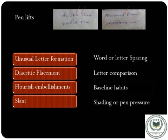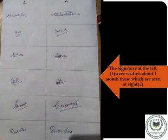Many more characteristics are used in signature analysis, such as unusual letter formation, diacritic placement, flourish embellishment, slant, word or letter spacing, letter comparison, baseline habits, and shading or pen pressure. In this slide we can see examples of signatures. The first row has signatures of different writers, and after one month — hiding their previous signatures — I asked the writers to sign again. Interestingly, the same author had a different signature after one month, but after analyzing based on the described characteristics, I found those two signatures belong to the same individual.